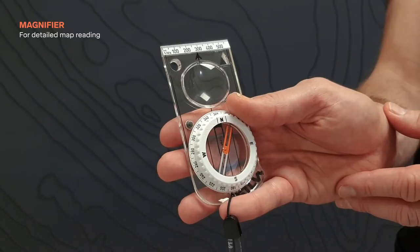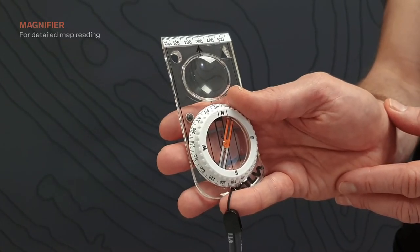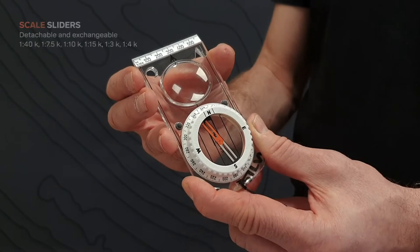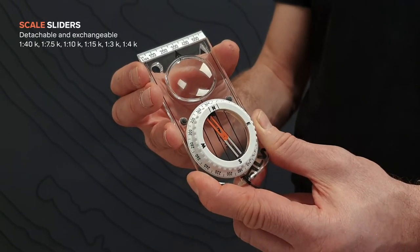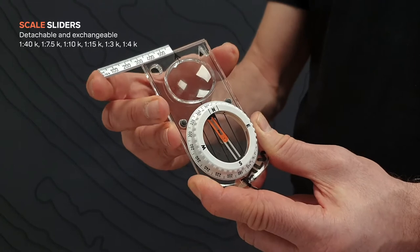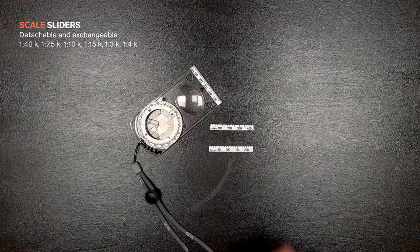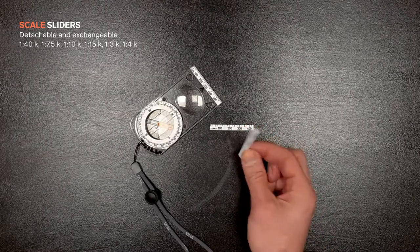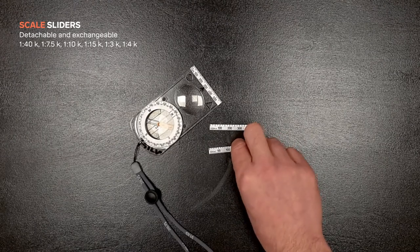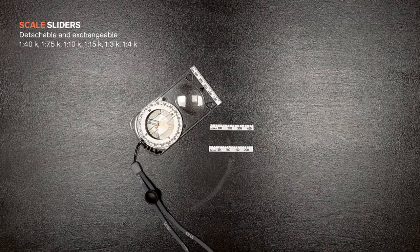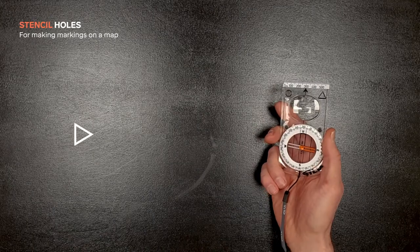The Spikejet Zoom has a large magnifier built in the base plate for extra detailed map reading. The scales on the tip of the base plate are detachable and exchangeable so you can alternate these depending on which map scale you are using. There are three different scale sliders that can also be flipped, providing a total of six different scales. The base plate also has two stencil holes if you want to make markings on your map.